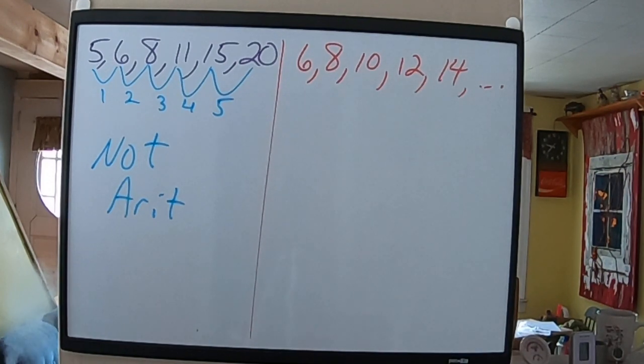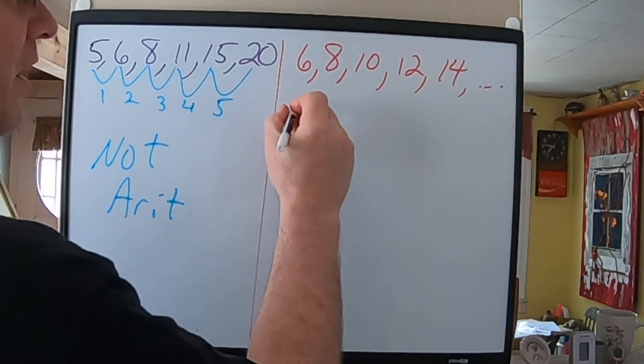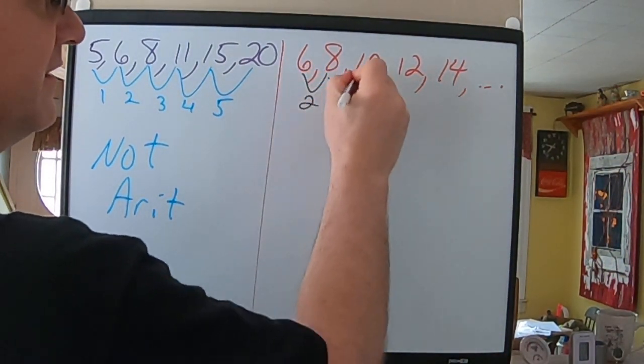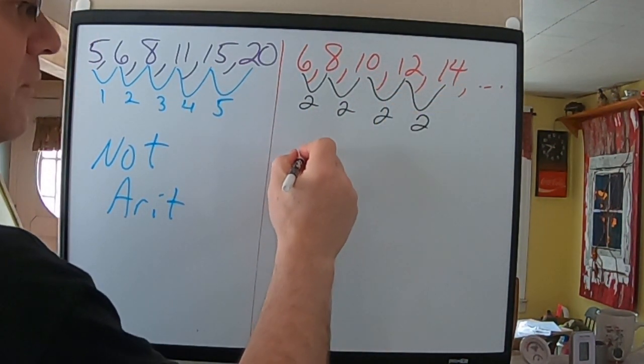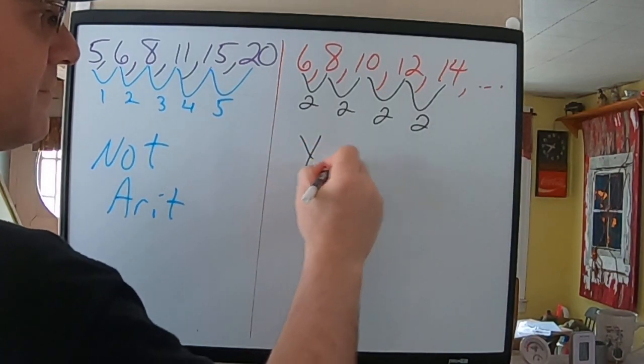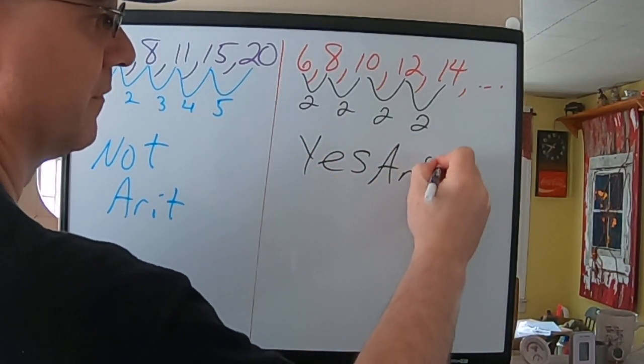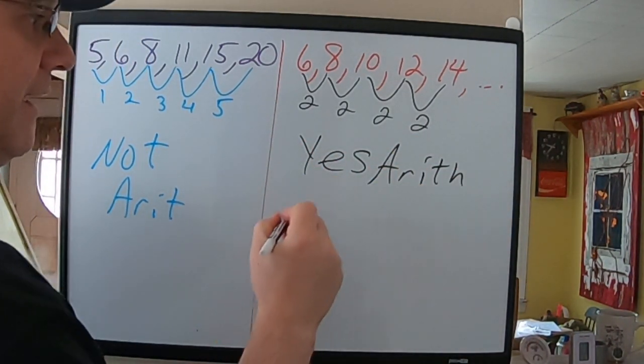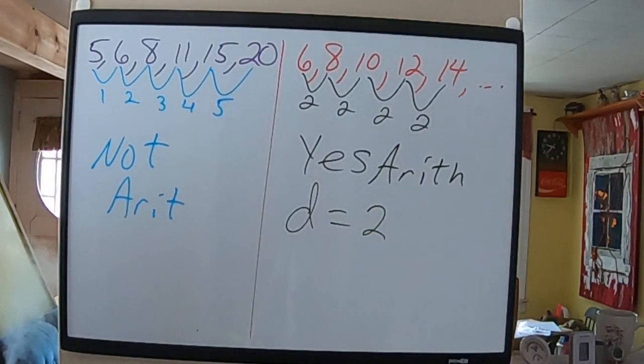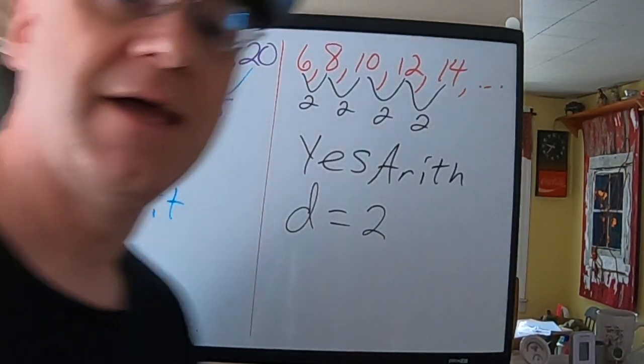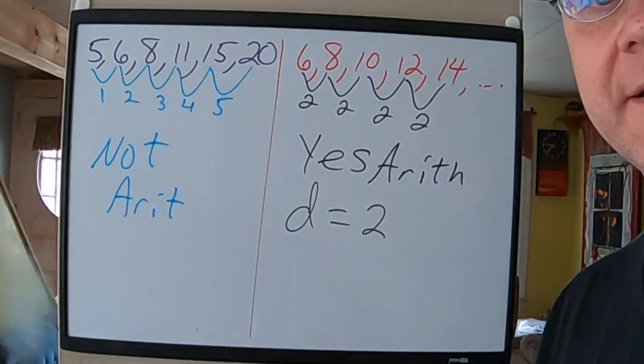However, if I go to the other one, the common difference is consistently 2. So, therefore, yes, arithmetic and D is 2. And that's how you would do that kind of problem. I hope this has answered your questions, and I hope you have a great day. Bye-bye.